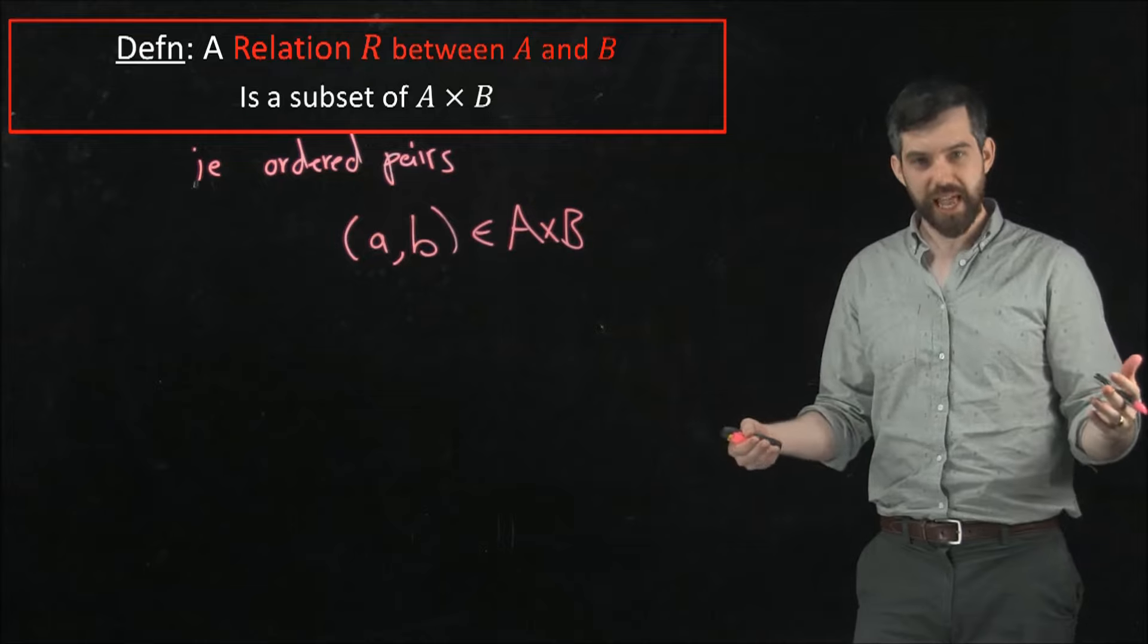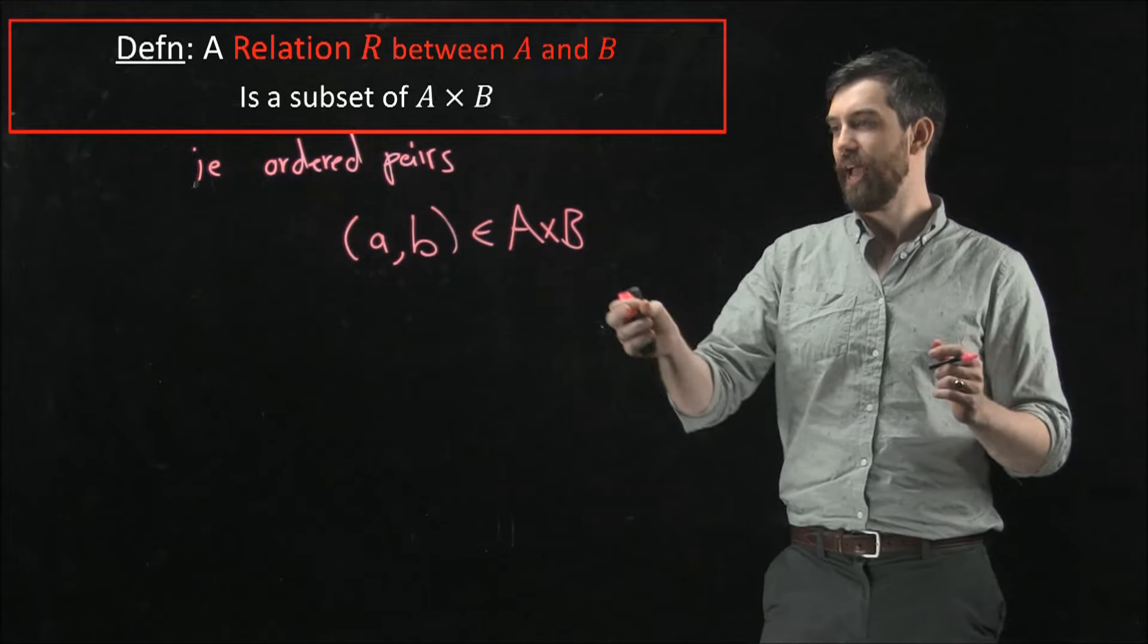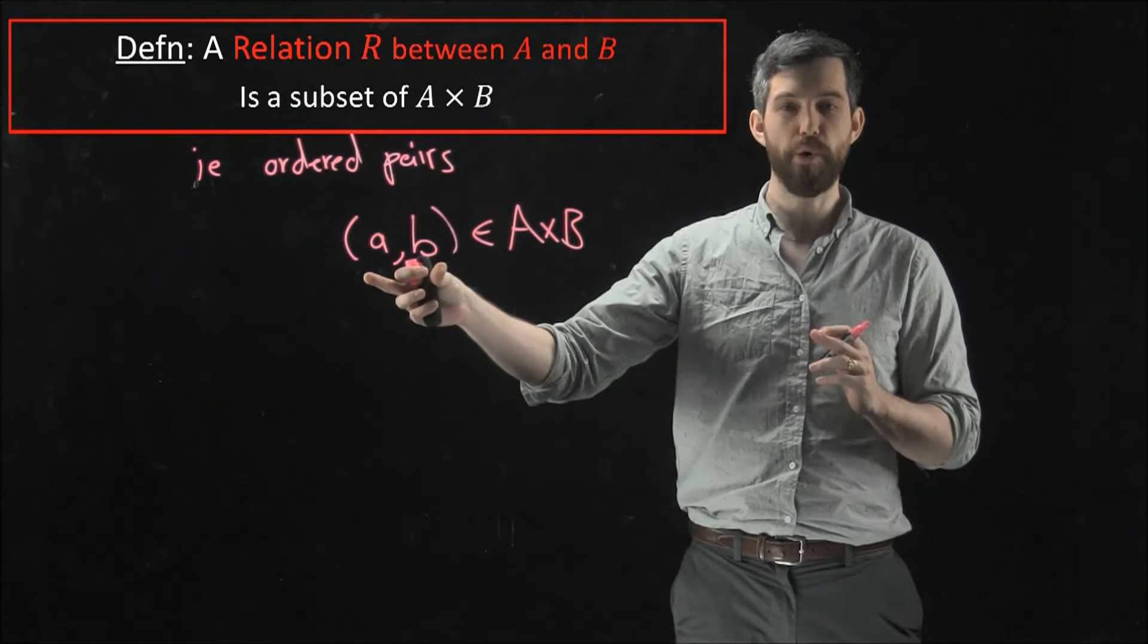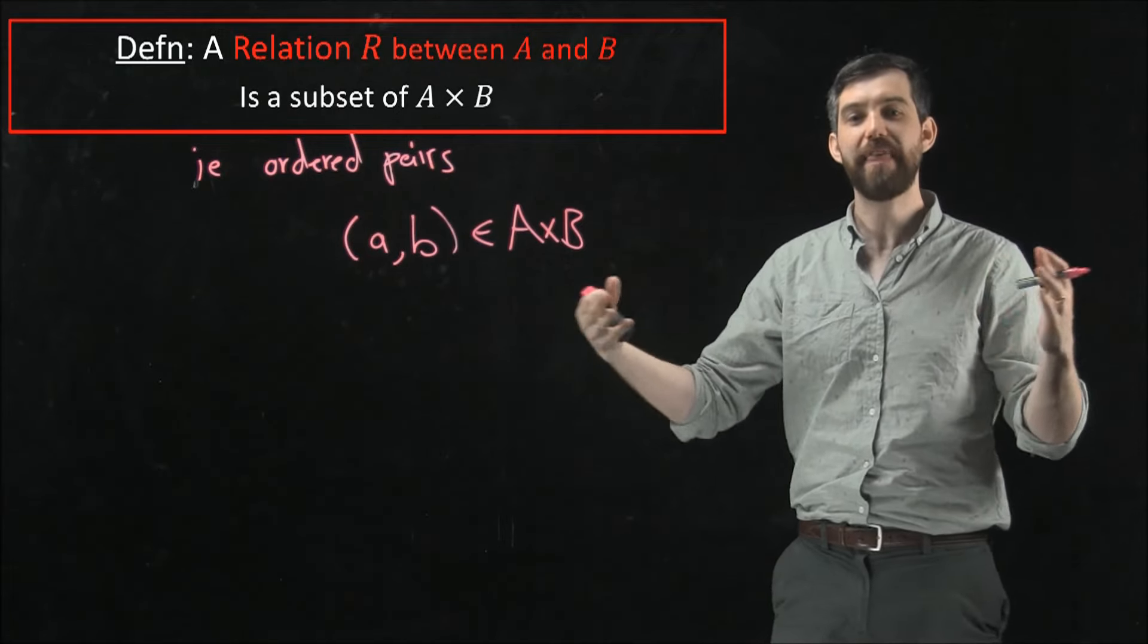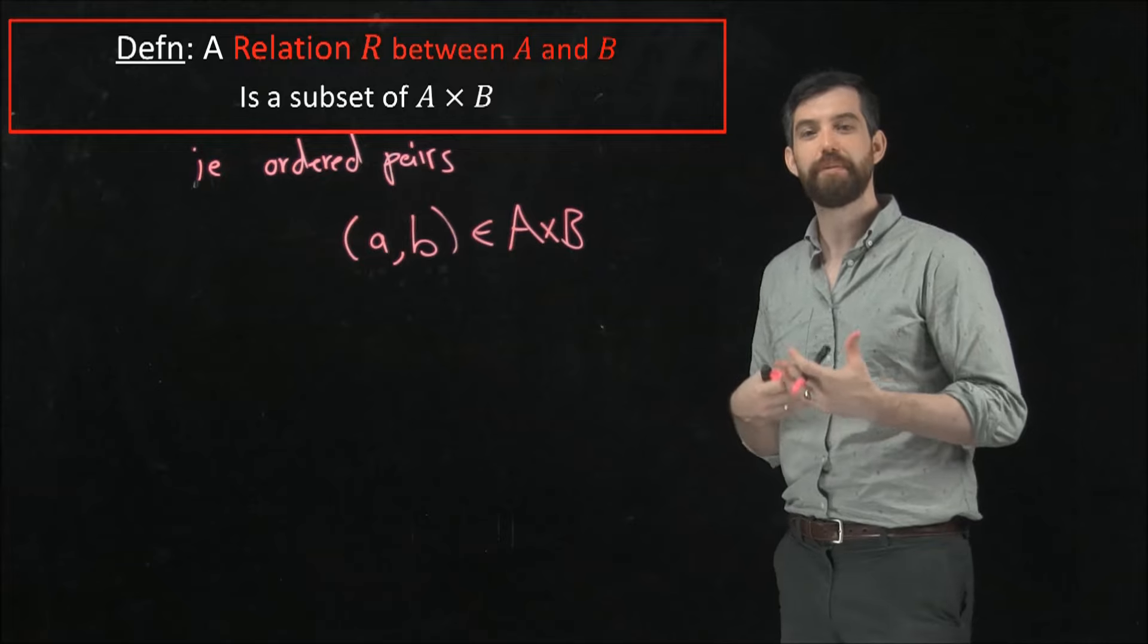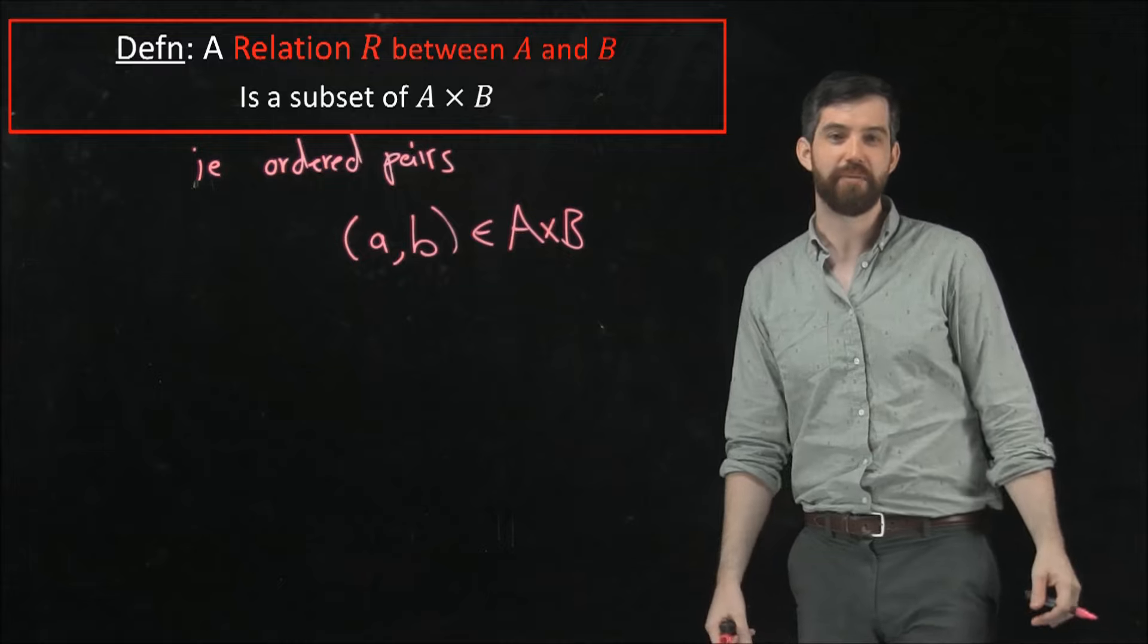So in the first example, you had A and B being, say, the real numbers or the integers, and that your relationship was less than, it was just all of the ordered pairs that had that property. So like the pair 2, 5 would be in there, but the pair 5, 2 would not.